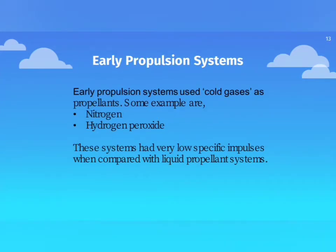Early propulsion systems used cold gases as propellants. Some examples are nitrogen and hydrogen peroxide. These systems had very low specific impulses when compared with liquid propellant systems.